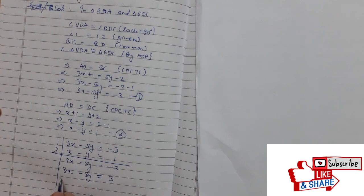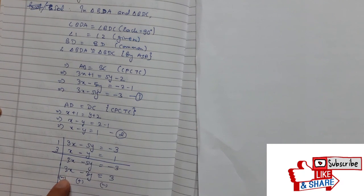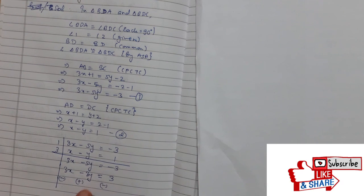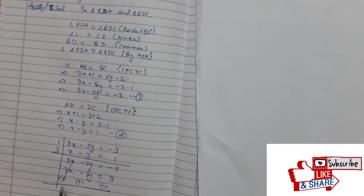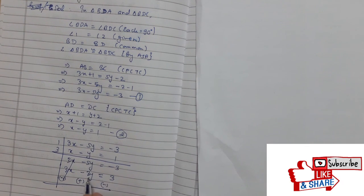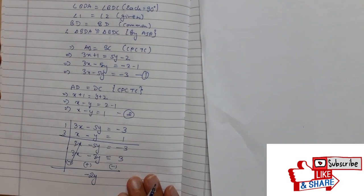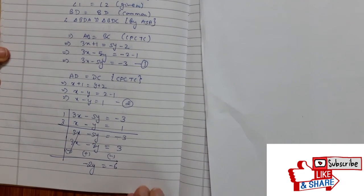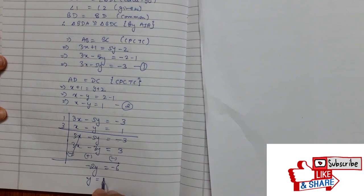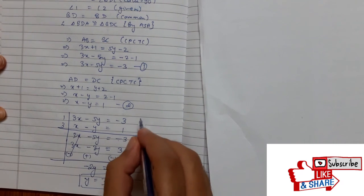Subtracting: this is positive, so it becomes negative. This is negative, it becomes positive. It is positive, it becomes negative. So 3x minus 3x is 0, minus 5y plus 3y is minus 2y. Minus 2y equals minus 3 minus 3 is minus 6. And we got y equals minus 6 over minus 2, that is 3. So y equals 3.